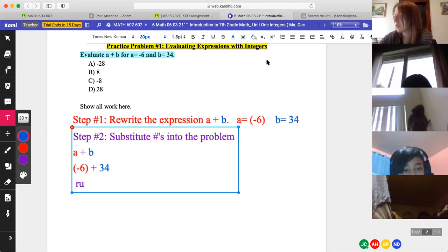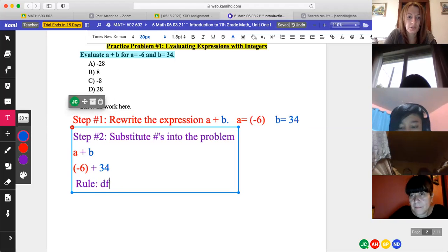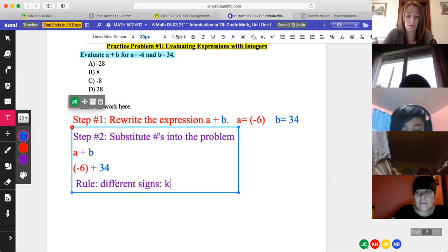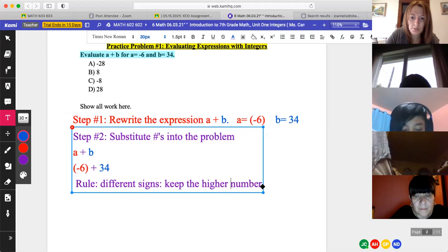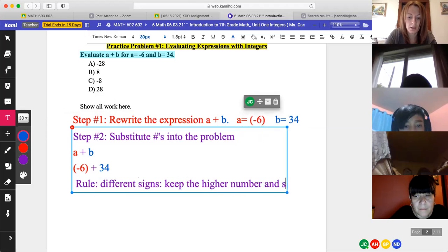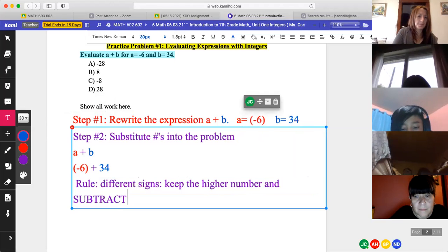Can you go over that rule? The rule is different signs. Keep the sign of the higher number and subtract. Say it one more time so everyone hears that. Different signs. Keep the sign of the higher number and subtract. Okay, this is like too much. Too many people are coming late now. Yeah, perfect.